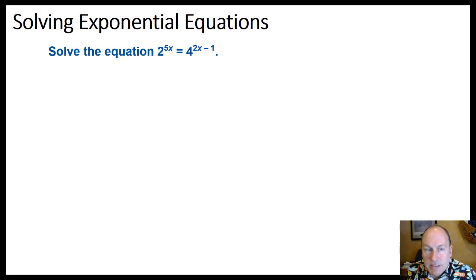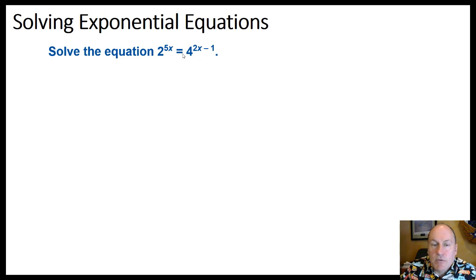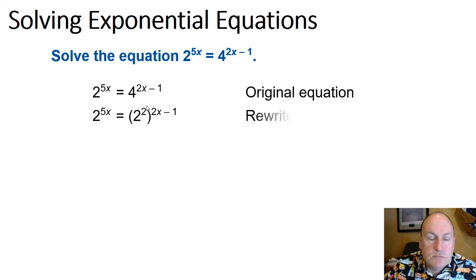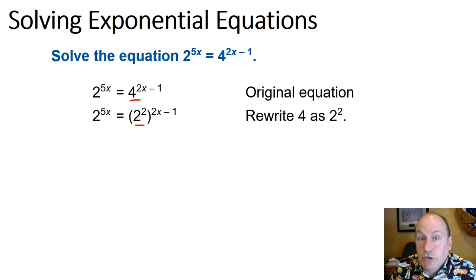Let's solve a more complex exponential equation: 2 to the 5x power equals 4 to the 2x minus 1 power. We cannot set the powers equal to each other until we have a common base. We have bases of 2 and 4, and we can rewrite 4 as 2 to the 2nd power, giving us a common base. So 2 to the 5x equals 2 to the 2nd power, all raised to the 2x minus 1 power, giving us that common base.